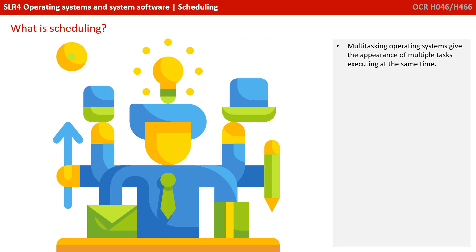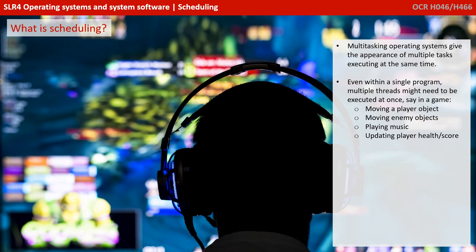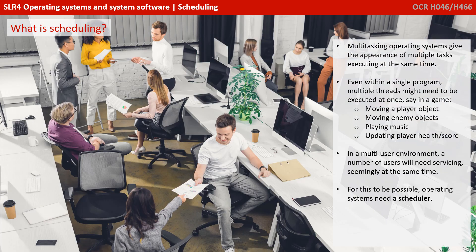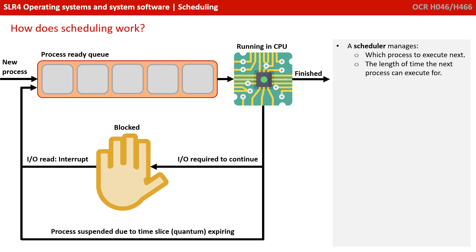So what actually is scheduling? Multitasking operating systems give the appearance of more than one task executing at the same time. Either within a single program, multiple threads might need to be executed at once — good examples are computer games, where you might need to move a player object while moving enemy objects, playing music, and updating statistics like health and score. In a multi-user environment, a number of users will need servicing seamlessly simultaneously. For this to be possible, operating systems need a scheduler, which manages which processes to execute next and the length of time that process can execute for.